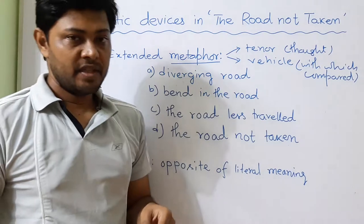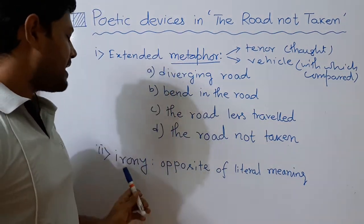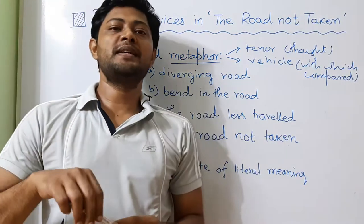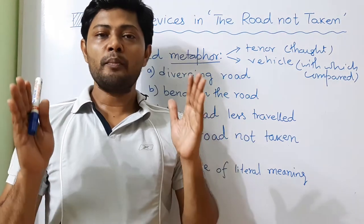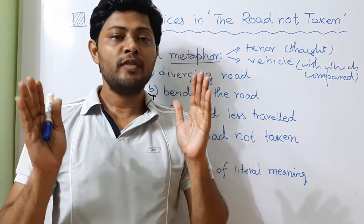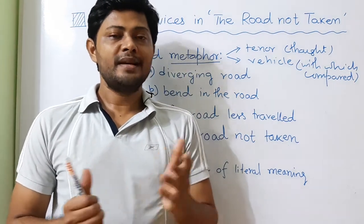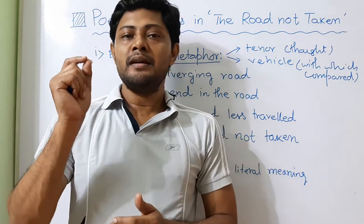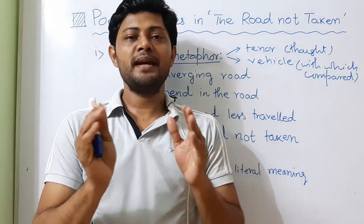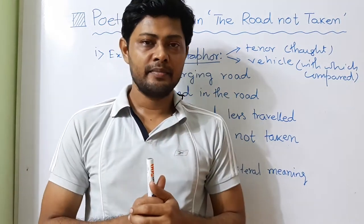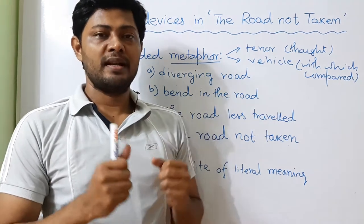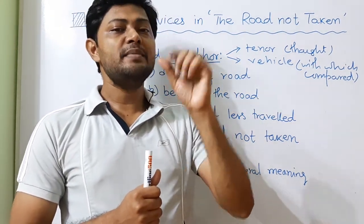The two main devices used by Frost in this poem are Extended Metaphor and Irony. First, we have to make clear what is a Metaphor. Metaphor is a special technique of speech or writing where we compare two things without stating explicitly — that means without clearly mentioning the two things and explaining the point of comparison. For example, we can say that the child is as beautiful as a flower, using the word 'as' to make the comparison. We can also use 'like' — the man is strong like a lion. So these are simile, not metaphor.